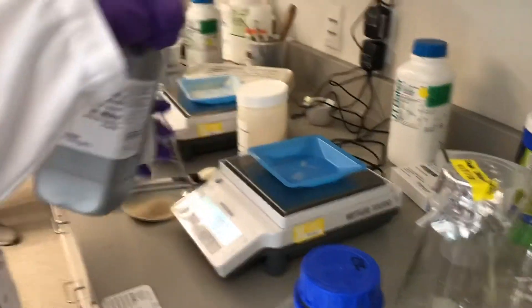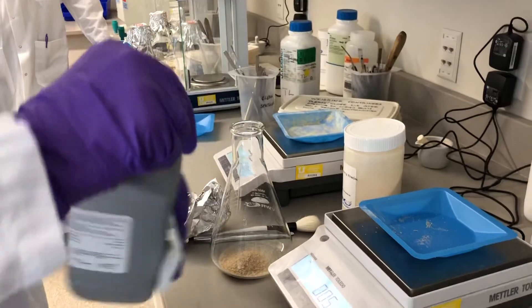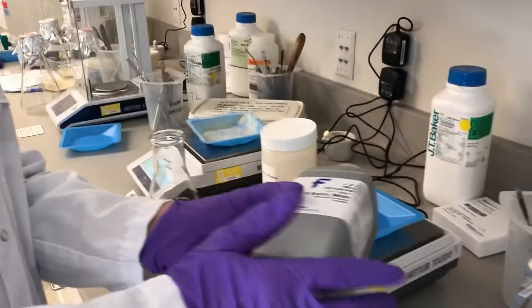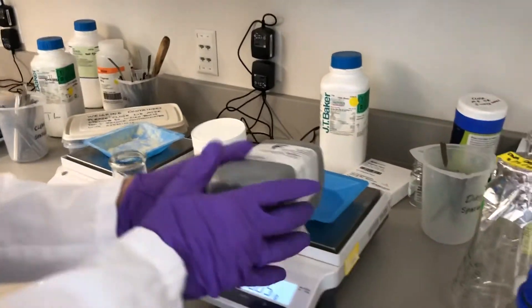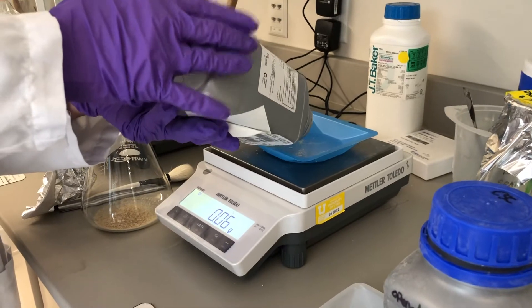The next ingredient is LB broth, and here you want twelve and a half grams. If you overshoot by a gram, that's okay. This is a little bit fluffier, lighter, so pour more gently. Avoid breathing in the dust.